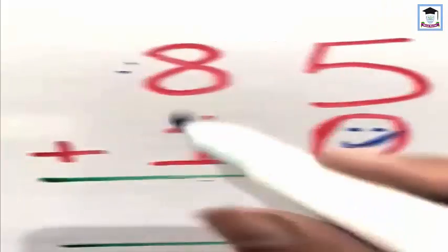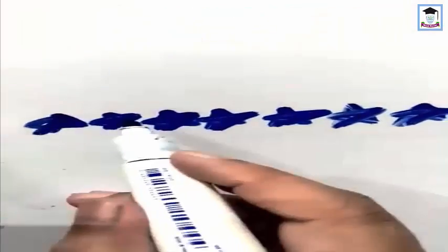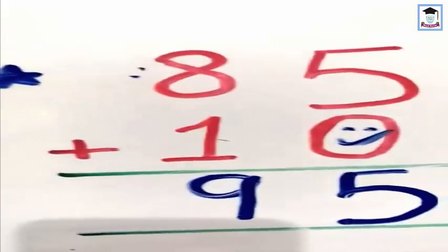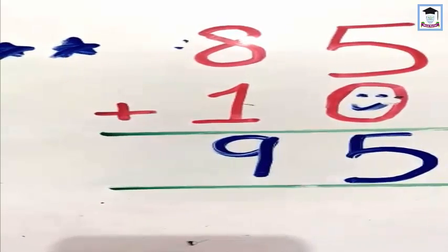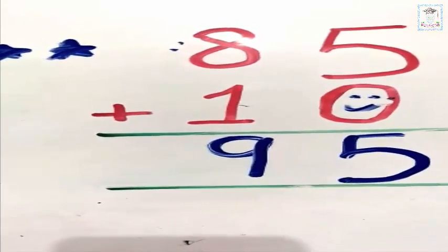Eight plus one: I have eight stars — one, two, three, four, five, six, seven, eight — and now one more. We will count the total: one, two, three, four, five, six, seven, eight, nine. How many? Nine. Eight plus one makes nine. Okay students, now you will practice on your notebooks.